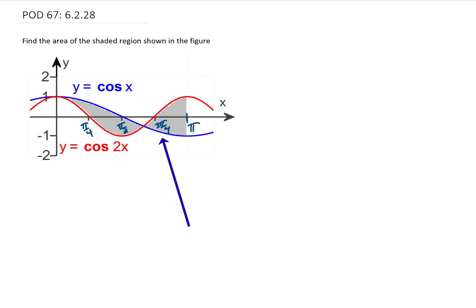this is 3 pi over 4. If we're going to find the area of this shaded region, we actually need to do it with two separate integrals. One integral from x equals 0 to this intersection point, and the second integral from this intersection point to x equals pi. So we need to find the intersection of cosine of x and cosine of 2x.